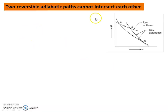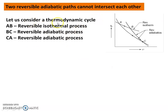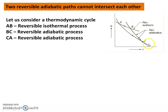Two reversible adiabatic paths cannot intersect each other — this is one fundamental theory that Clausius Theorem developed. There is a thermodynamic cycle A, B, C, and A. Process A-B is reversible isothermal; B-C is reversible adiabatic; C-A is again reversible adiabatic. A-B is isothermal heat addition, B-C is reversible adiabatic expansion, C-A is reversible adiabatic compression. The processes B-C and A-C intersect at point C.